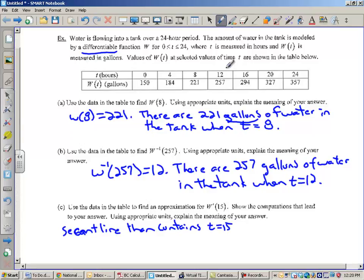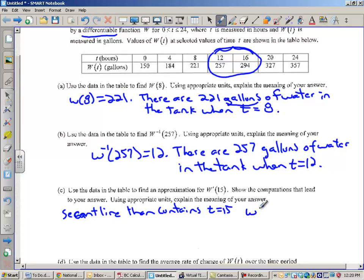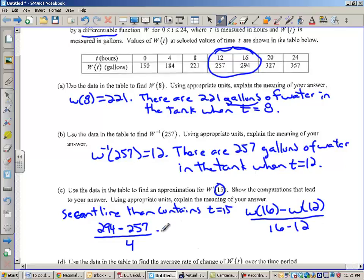Let's look up here. T equals 15 would lie somewhere in here. So, I'm going to use a secant line slope using this data right here. A secant line is average rate of change or your slope formula. I'm going to use W(16) minus W(12) divided by 16 minus 12. That's the calculation I'm going to use. That would be a secant line slope. The average rate of change between 12 and 16 because 15 is in between 12 and 16. So, I'm going to look up at the table and plug those in. So, this is 294 minus 257 divided by 4.